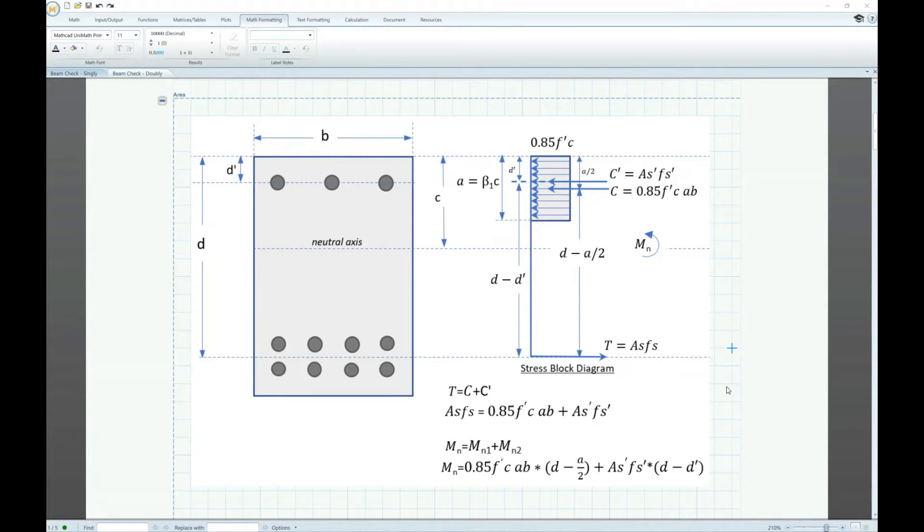The moment capacity of a doubly reinforced beam is calculated by taking the moments about T which is equal to C times the moment arm d minus a over 2 plus C prime times the moment arm d minus d prime. In order to calculate the moment capacity we need to find the value of a which is dependent on the value of C. We also need to find the value of fs and fs prime which is based on the strain value and the strain value is also dependent on C. The strain value tells us whether the beam is tension controlled, transition, or compression controlled so we can apply the appropriate strength reduction factor. Therefore determining the value of C which is the distance to the neutral axis is very crucial.